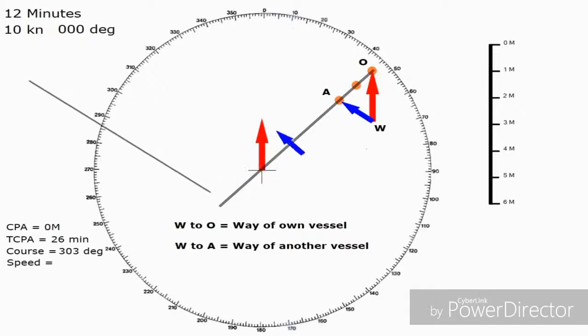To find their speed all we're going to do is measure the length of that vector and we find it's about 1.1 miles. They've done that 1.1 miles in 12 minutes. Now of course to get 12 minutes to an hour you multiply by 5, so we times both by 5 to get 5.5 knots. Now we've found their course and speed.